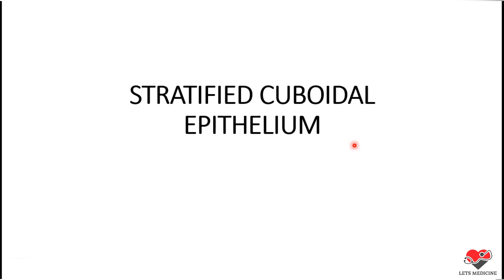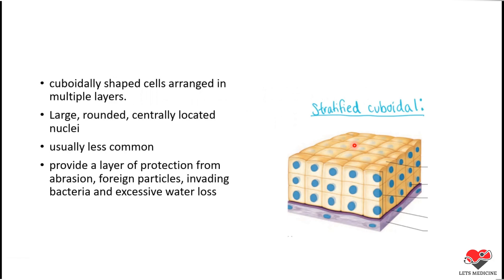Today we will discuss the topic of stratified cuboidal epithelium. Stratified epithelium is made up of multiple layers of epithelial cells. The name can be stratified cuboidal, stratified columnar, or stratified squamous, depending upon the shape of the cells present in the topmost layer. In stratified cuboidal epithelium, the surface layer contains cube-like cells with a prominent round nucleus, giving this epithelium its name.